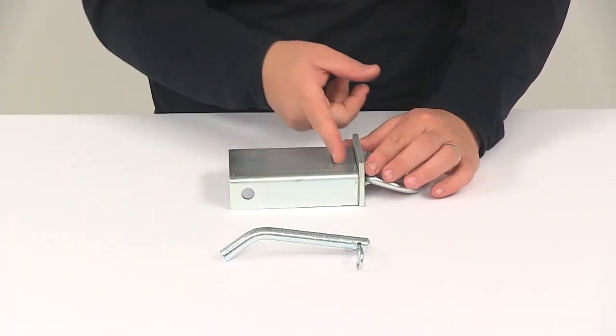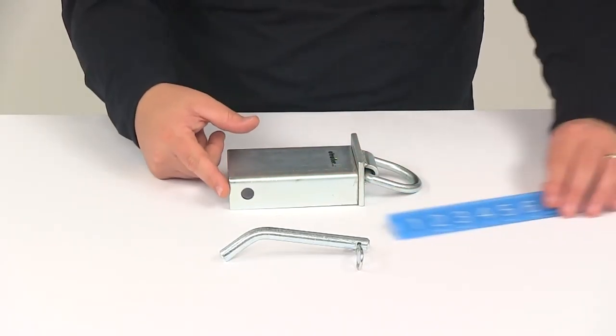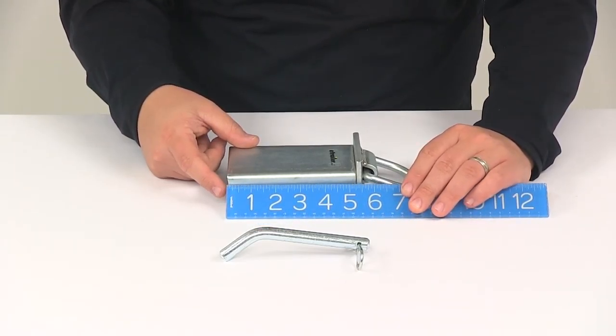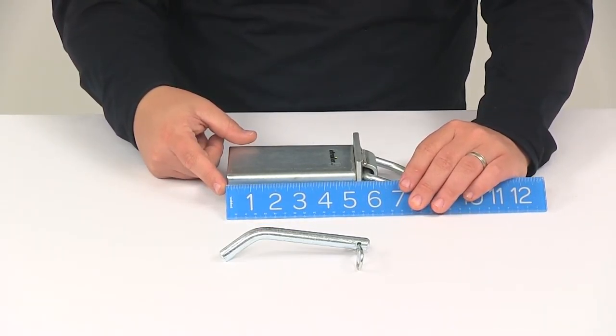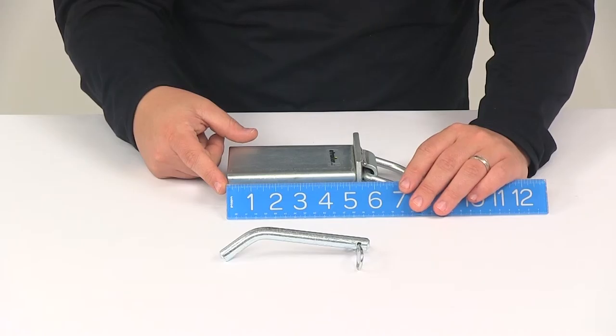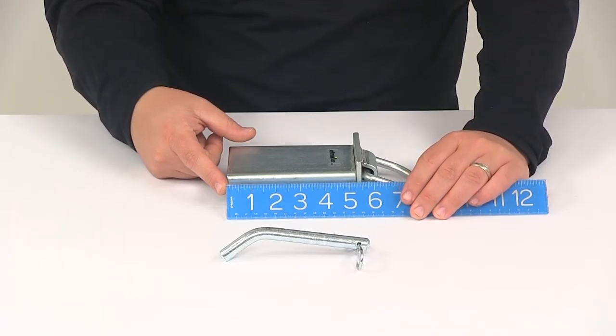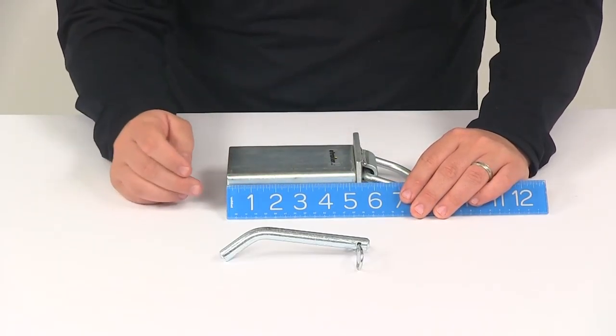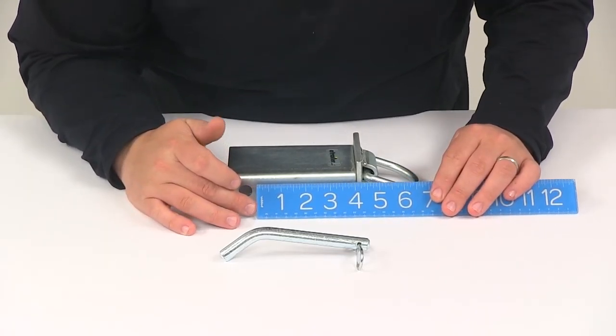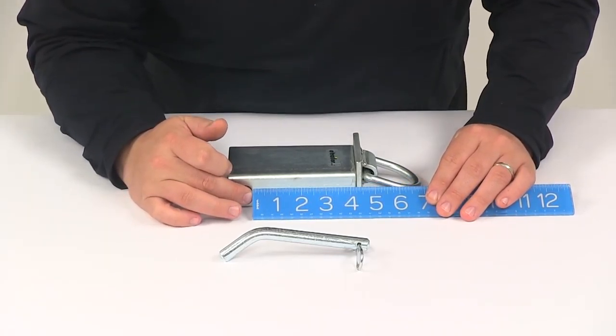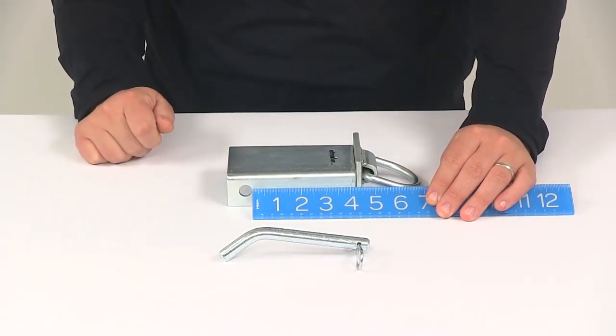If we measure from the bottom of the mounting plate to the bottom of the anchor, that's going to give us a measurement of five and one quarter inches. And if we measure from the bottom of the mounting plate to the top of the pinhole, that's going to give us a measurement of about four and one quarter inches.